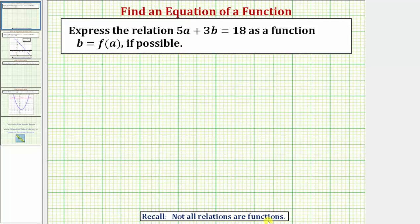Functions are relations where every input has exactly one output. But in this case, the given relation is a linear relation where all linear relations will be functions except when we have the input variable equal to a constant where the graph would be a vertical line.